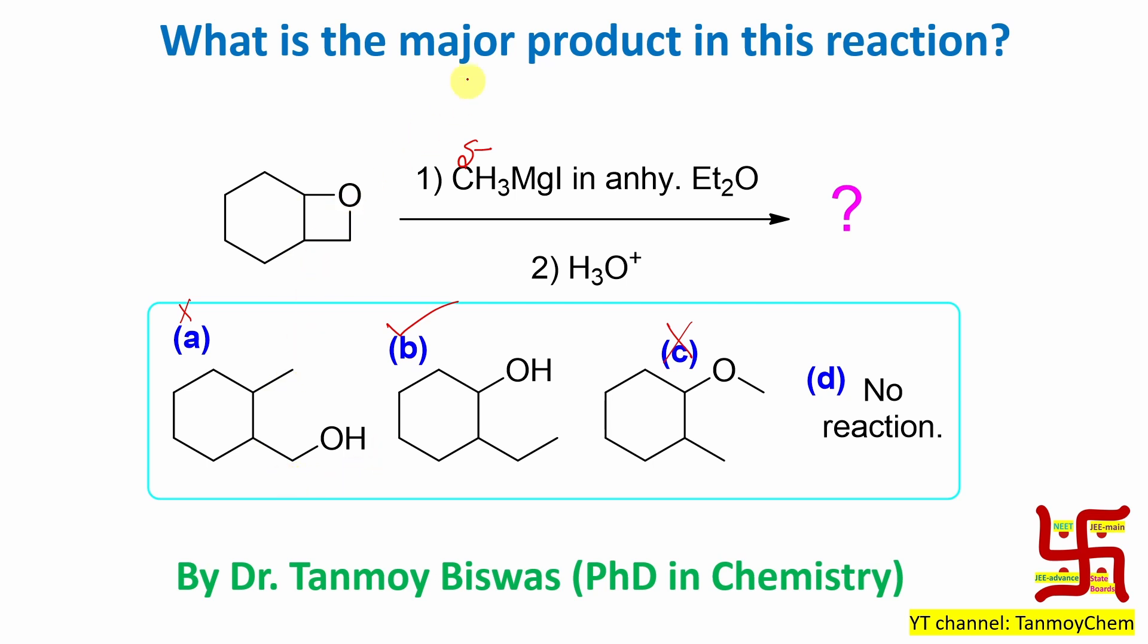Now, Grignard reagent reacts with four-member epoxide to produce this alcohol. Open up. Even remember one more piece of information. Grignard reagent also reacts with three-member ring or epoxide and results in, for example, if you have CH3, then CH3CH2CH2OH. Another primary alcohol with two carbons extra. So, this is another reaction. So, from that knowledge, you can consider, okay, option C is not possible. No reaction, obviously, not possible. So, between A and B. Now, in this way, you have removed these two options.